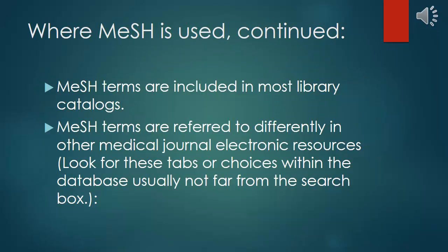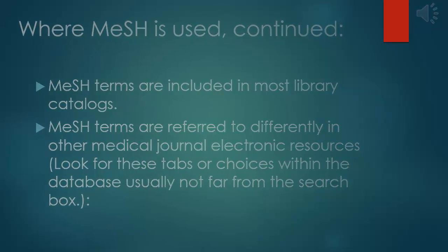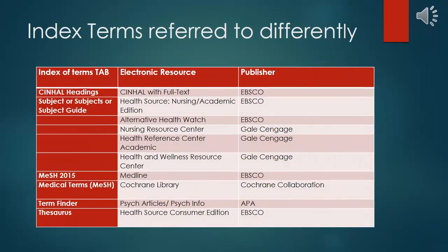MESH terms are included in most library catalogs. MESH terms are referred to differently in other medical journal electronic resources — look for a tab within the database, usually not far from the search box. By looking at this chart, we see that EBSCO CINAHL uses the term 'CINAHL Headings,' Cochrane Library uses 'Medical Terms / MESH,' PsycARTICLES uses 'Term Finder,' and Health Source Consumer Edition's index tab is 'Thesaurus.'